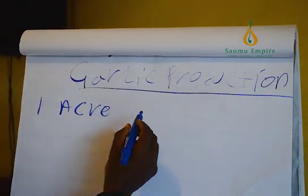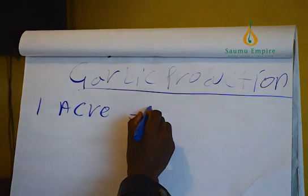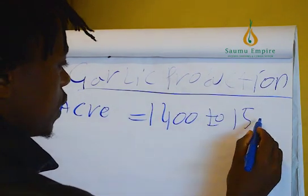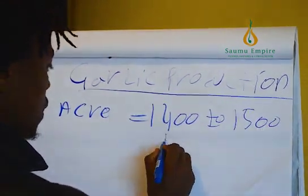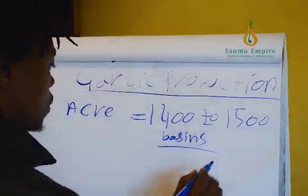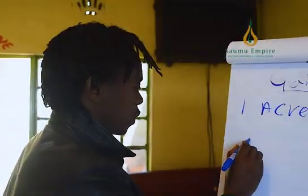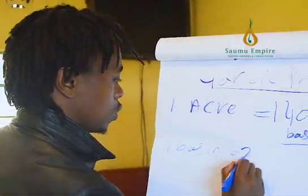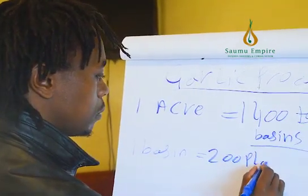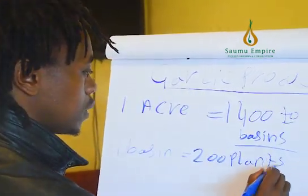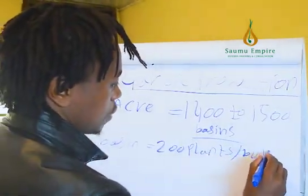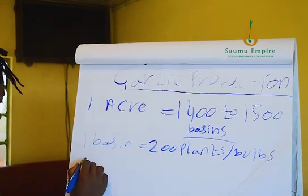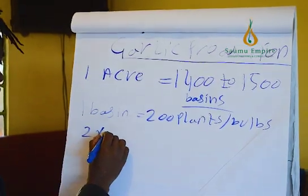Welcome. One acre is equal to 1400 to 1500 basins. One basin is equal to 200 plants or bulbs. The measurement of one basin is two meters by one meter.